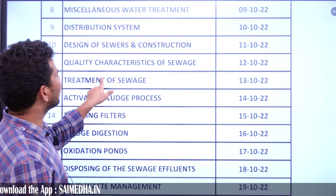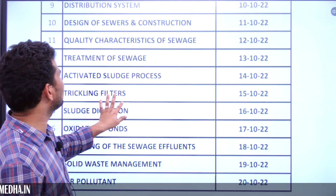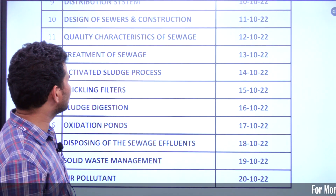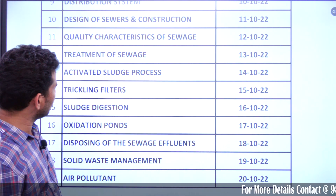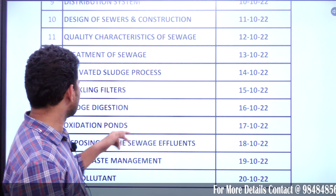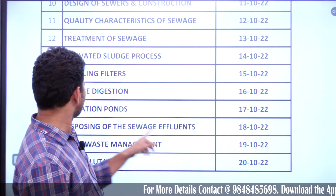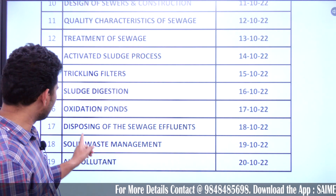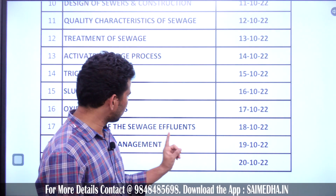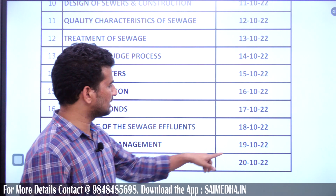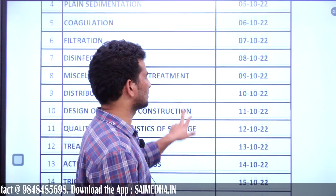On October 11th, design of sewers and construction. On October 12th, quality characteristics of sewage. On October 13th, treatment of sewage. On October 14th, activated sludge process. On October 15th, trickling filters. On October 16th, sludge digestion. On October 17th, oxidation ponds. On October 18th, disposal of sewage effluents. On October 19th, solid waste management. On October 20th, air pollution.